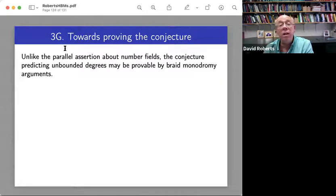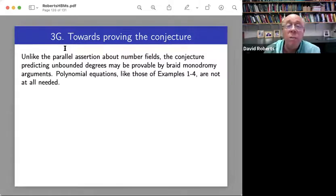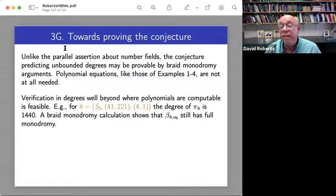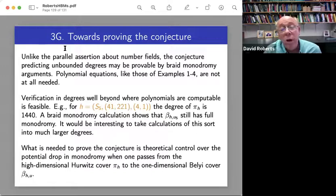And this last slide just repeats things that I've said. So unlike the parallel assertion about number fields, this conjecture predicting unbounded degrees may be provable by braid monodromy arguments. This is a topological group theoretical assertion. What's needed to prove the conjecture is theoretical control over the potential drop in monodromy when one passes from the high dimensional Hurwitz cover to the one dimensional Belyi slice of it.